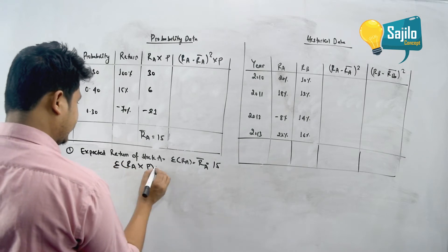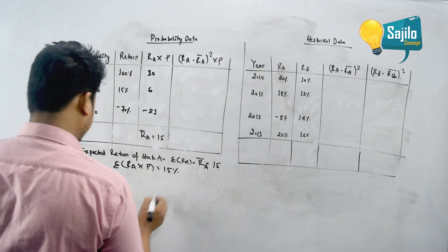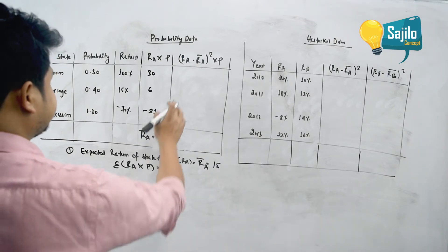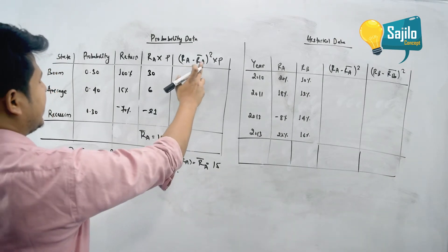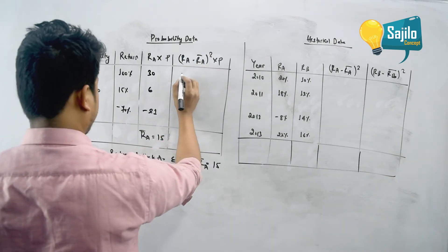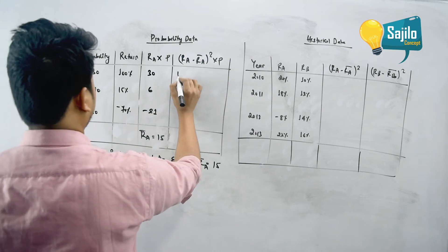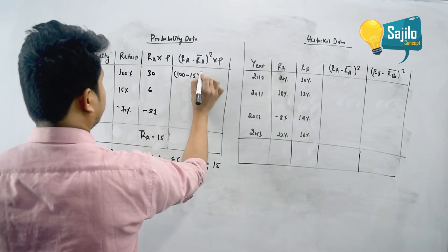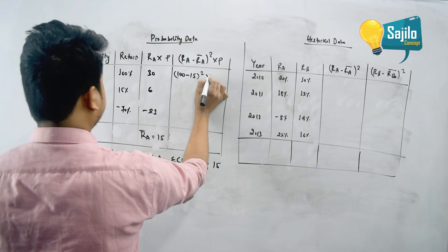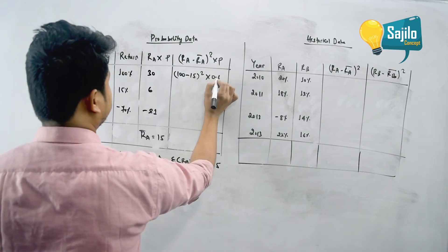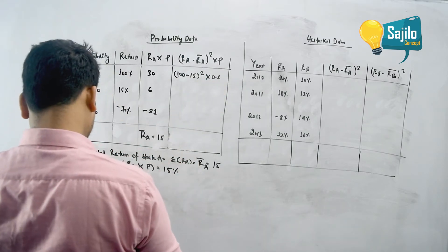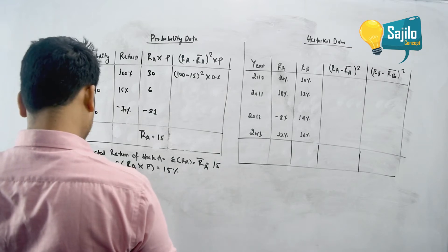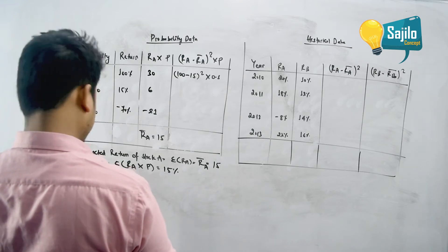We have to take this 15 percent as our expected return R_A. We have to add the variance components: R_A minus R_A-bar squared into P. So: 100 minus 15, squared, into P equals 0.3. That is 100 minus 15 squared into 0.3.